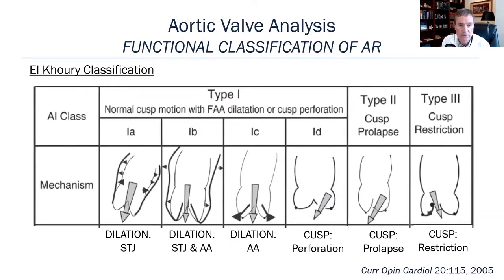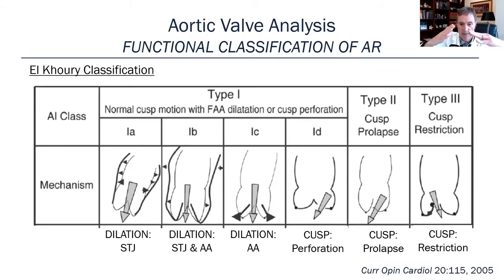El Khoury from Brussels developed a functional classification of aortic regurgitation depending on what was causing the problem. Types 1A, B, and C are dependent on the aorta itself with normal leaflets: dilatation of the sinotubular junction pulling it apart; dilatation of both the sinotubular junction and aortic annulus as seen in Marfan syndrome; or just dilatation of the aortic annulus pulling the leaflets away from coaptation. Type 1D is a special mechanism — perforation of one of the cusps. Type 2 is cusp prolapse where the aorta itself is normal, and type 3 is cusp restriction.